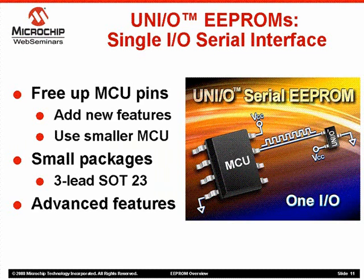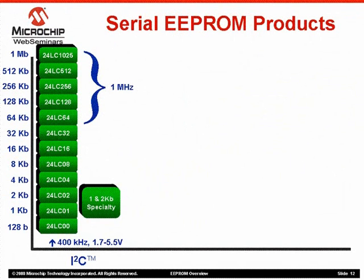Let's take a look at Microchip's complete Serial EEPROM product line. Here is our product roadmap. Looking at I2C products in the left-most column, the available densities are listed along the vertical Y axis. All products in this family start with a 24 prefix. It has a very wide density range from 128 bits to 1 megabit. The standard family has a maximum bus speed of 400 kHz, and our larger densities have 1 MHz versions. We also have several 1 and 2 kbit specialty products used for applications like computer monitors and DIM memory sticks.